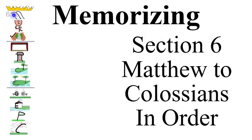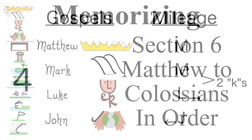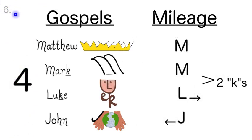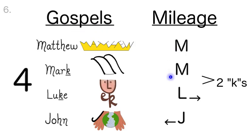Memorizing Section 6, Matthew to Colossians in order. The first group of Section 6 is the four Gospels, which are about the life of Jesus. Their initials are MMLJ, for mileage.